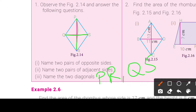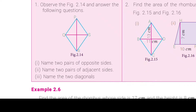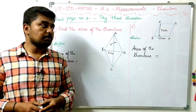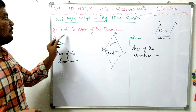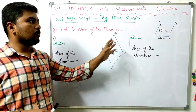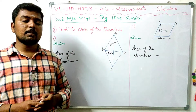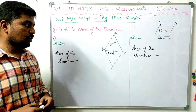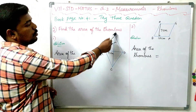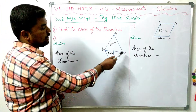That's the second question. Try this. Find the area of the rhombus — two rhombuses. For the area of the rhombus, the first rhombus has vertices A, B, C, D.